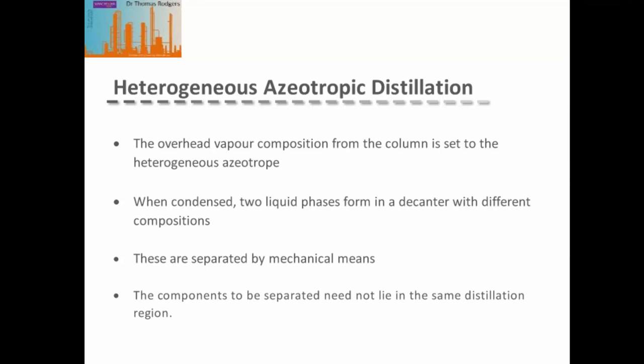As these two liquid phase compositions usually lie in different distillation regions of the residue curve map, the restriction on heterogeneous azeotropic distillation is generally overcome. In fact, because of the compositions of these two liquid phases, the components we're separating do not need to lie in the same distillation region.